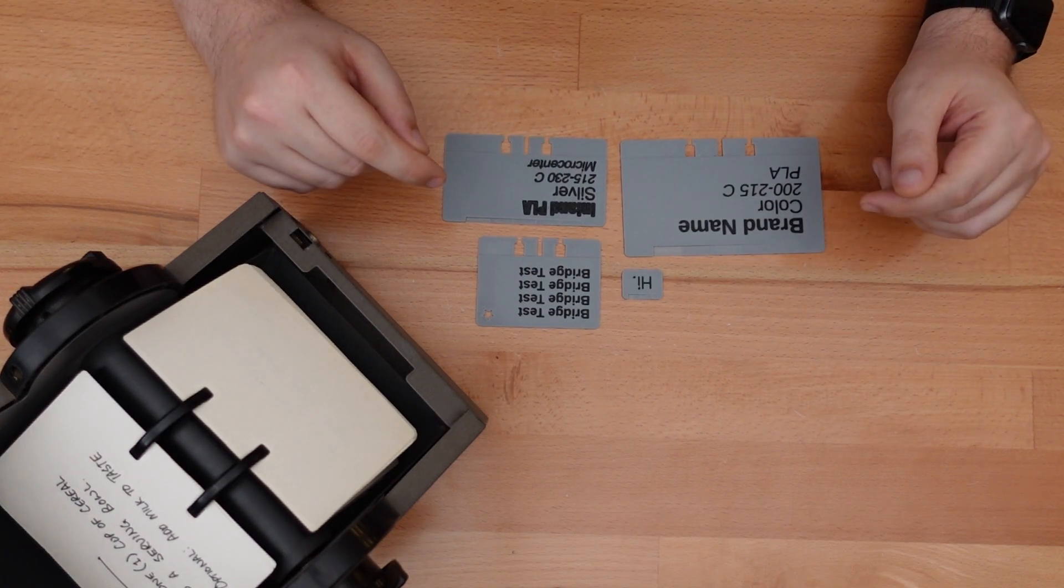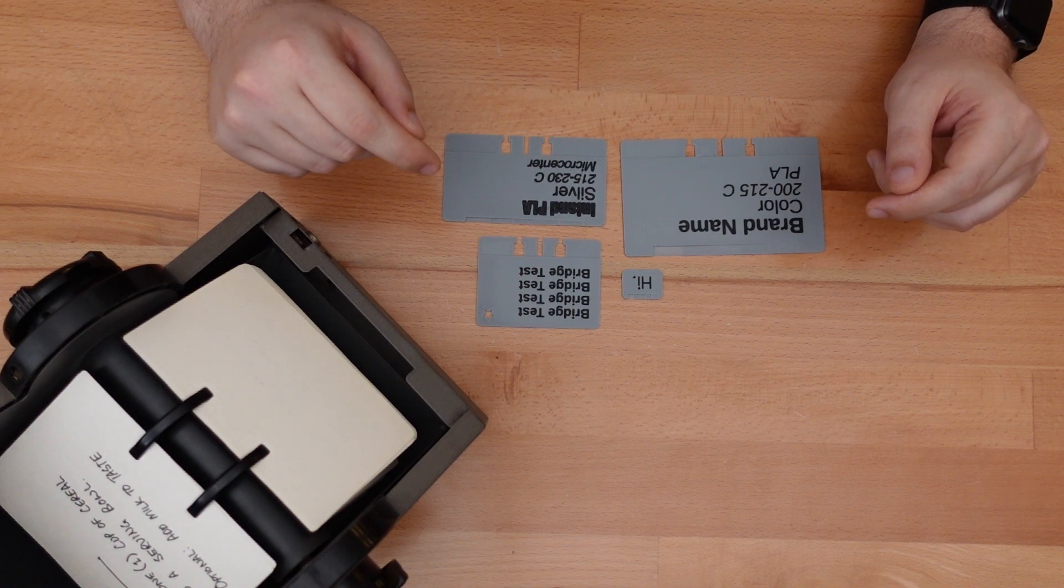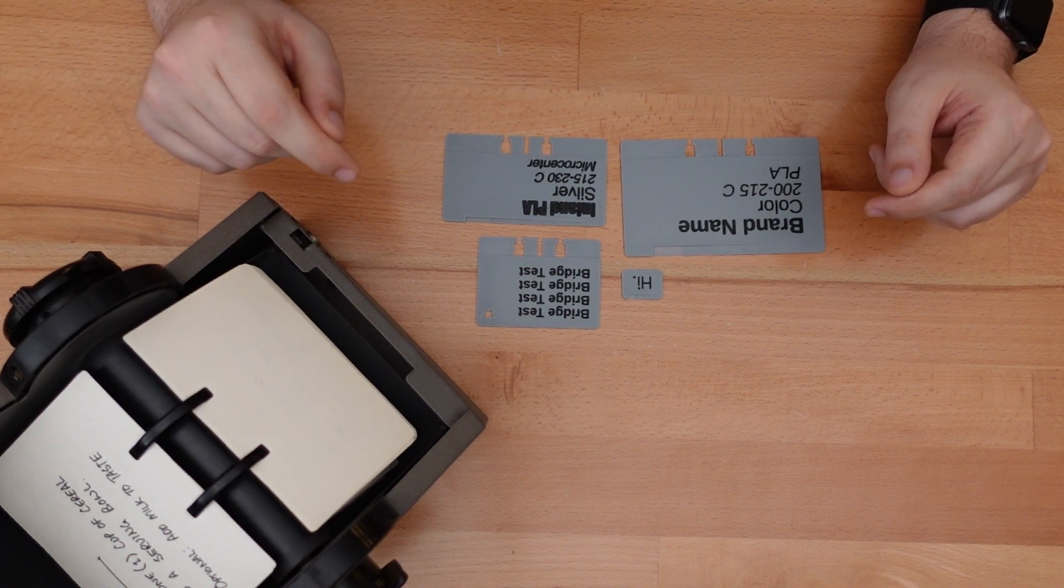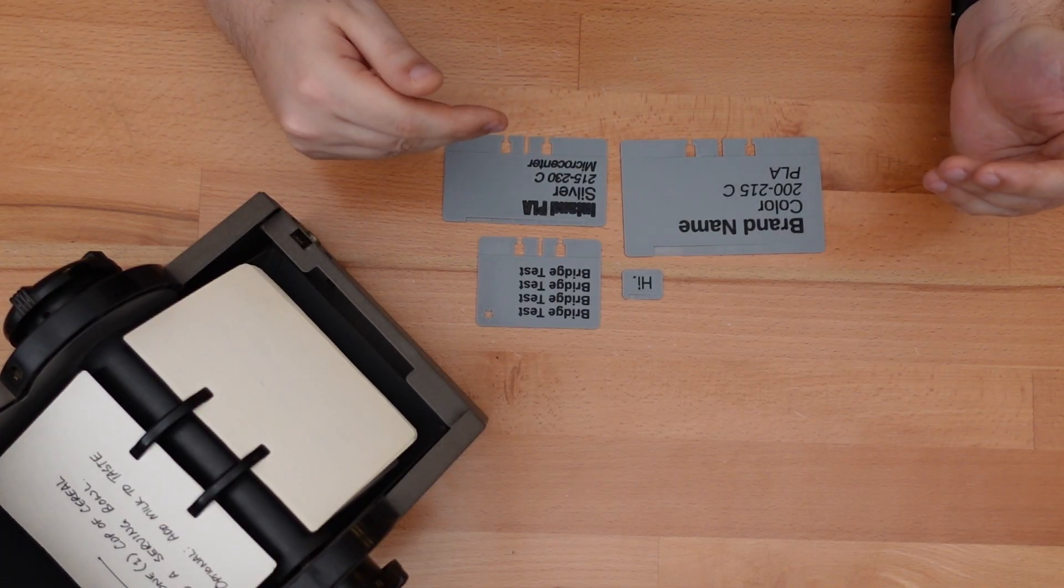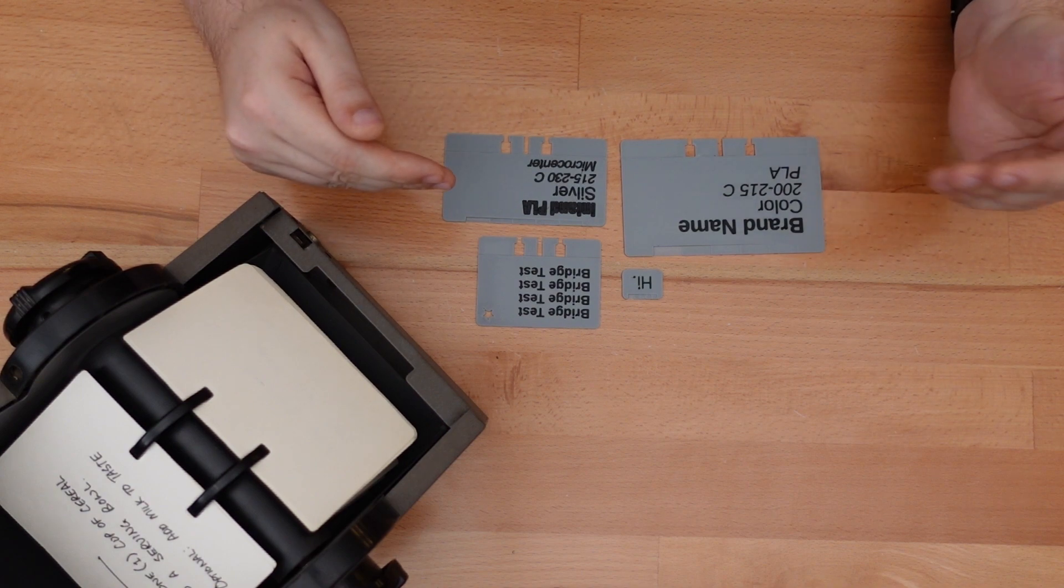If your computer has a font installed, this design should be able to access it. Just open up OpenSCAD's Font List window, located under the Help menu, find your font there, and copy that to the specific line you want. That's right, each individual line can have a different font or a different size text.